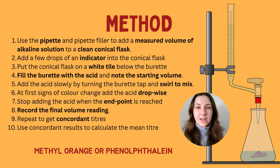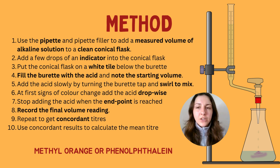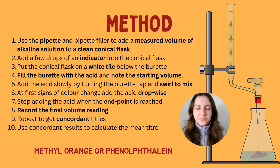Add a few drops of your chosen indicator, then place the conical flask onto a white tile so you can see the colour change more clearly. Place the conical flask underneath the tap of the burette so that when you add the acid from the burette into the solution, it's easily done. Fill the burette with the acid and note the starting volume.